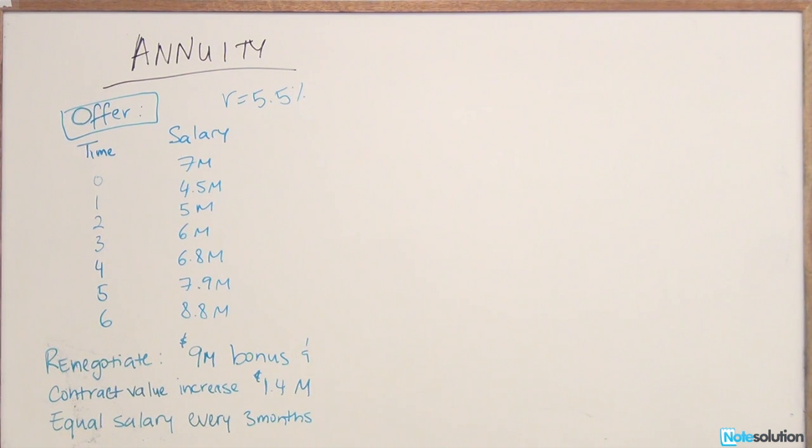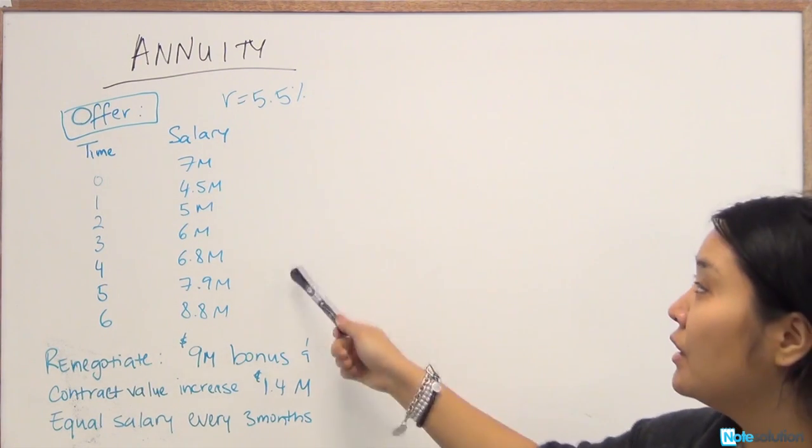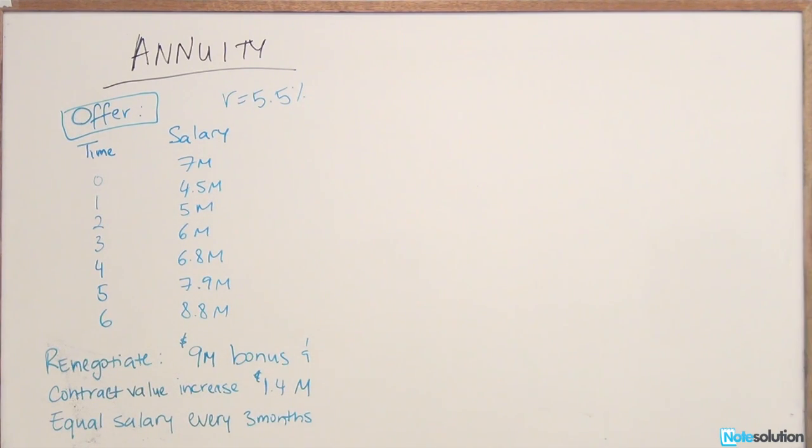He wants you to renegotiate the terms for him. He wants to have a $9 million signing bonus, and he wants his contract value increased by $1.4 million. He wants an equal salary every three months instead of unequal cash flows on a yearly basis.